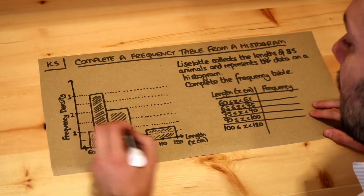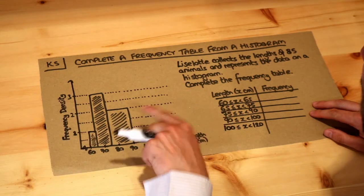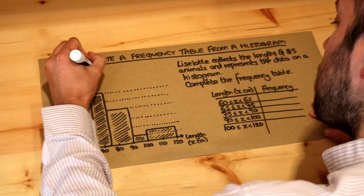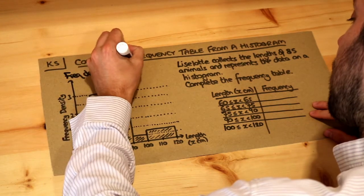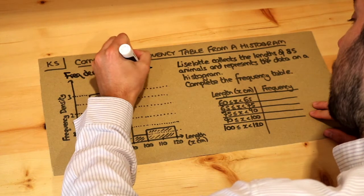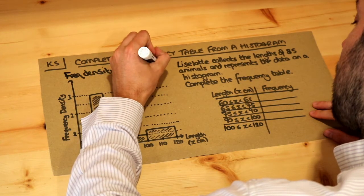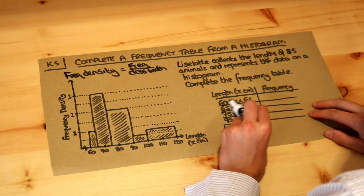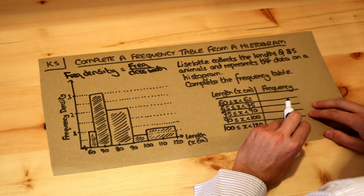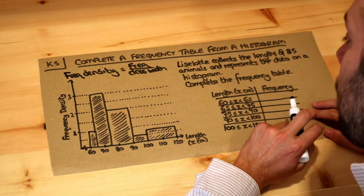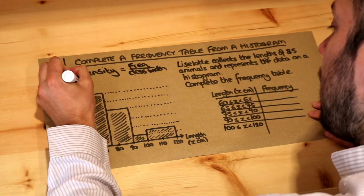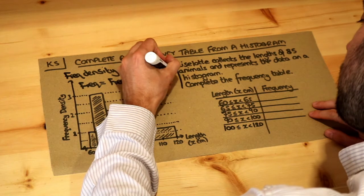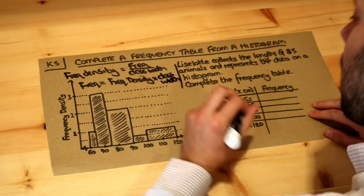We saw that frequency density was this idea of concentration - how many animals we had per centimeter - and we had this formula. Frequency density equals frequency divided by class width. The frequency we don't know here, but the class width is basically the width of the interval. So 60 to 65, that's a width of 5 centimeters. If we rearrange this formula, we get frequency equals frequency density multiplied by class width.